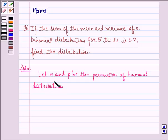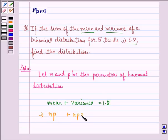It's given to us in the question that sum of mean and variance is 1.8. So mean plus variance is 1.8. Mean is the same as NP and variance is the same as NPQ. So NP plus NPQ is equal to 1.8.